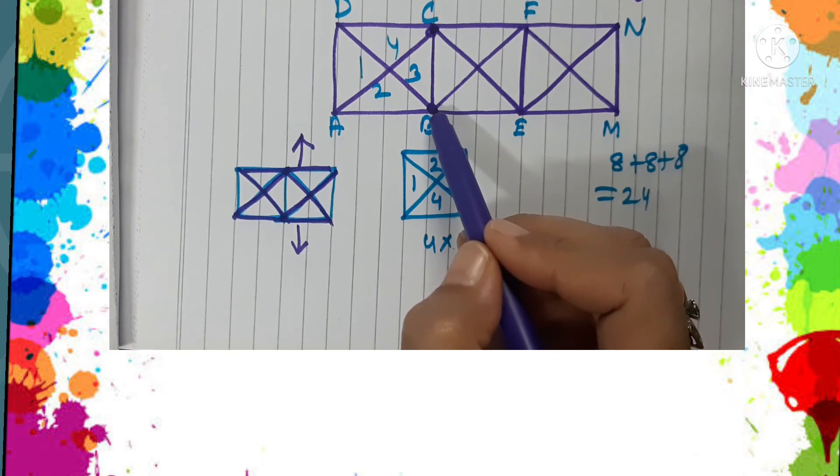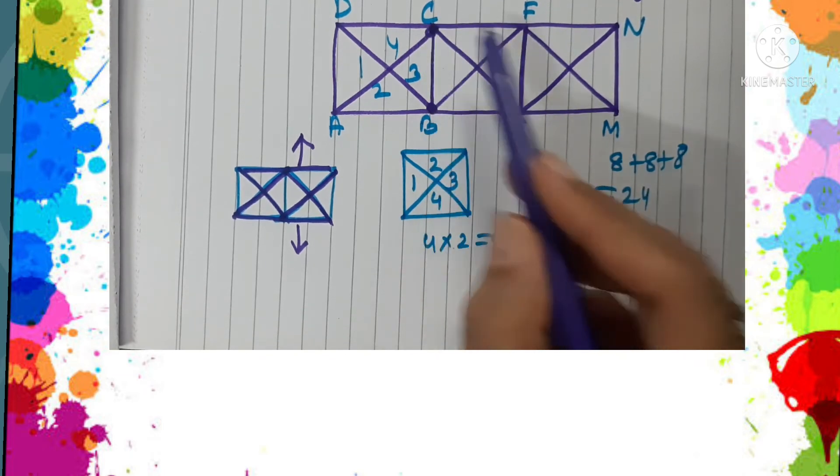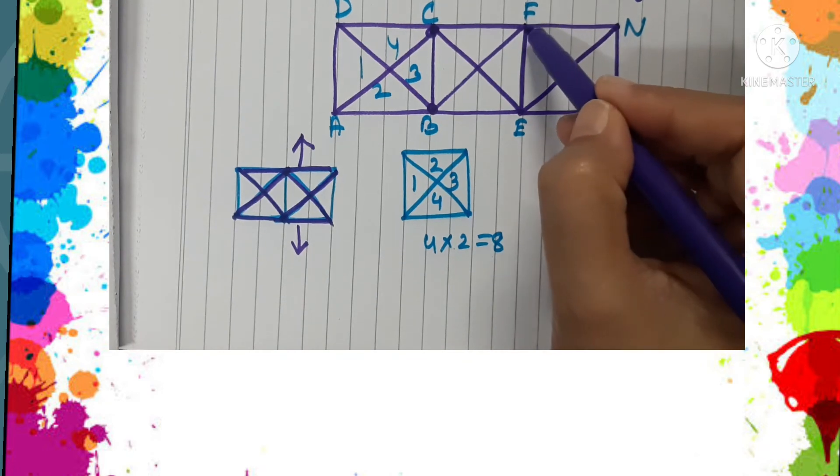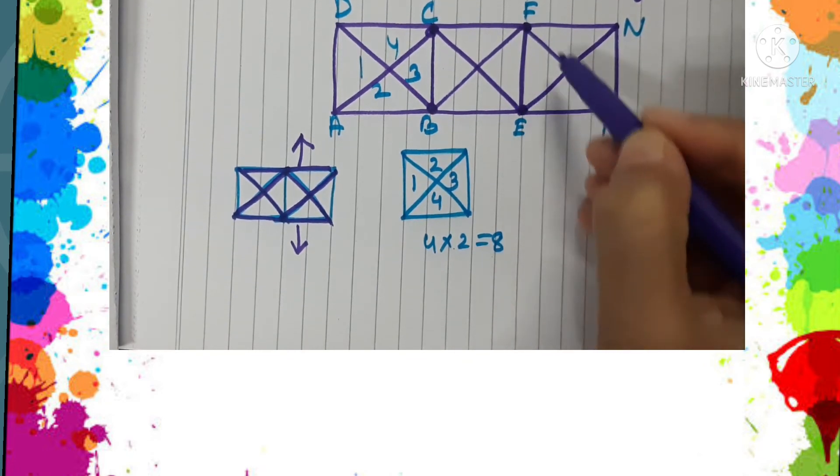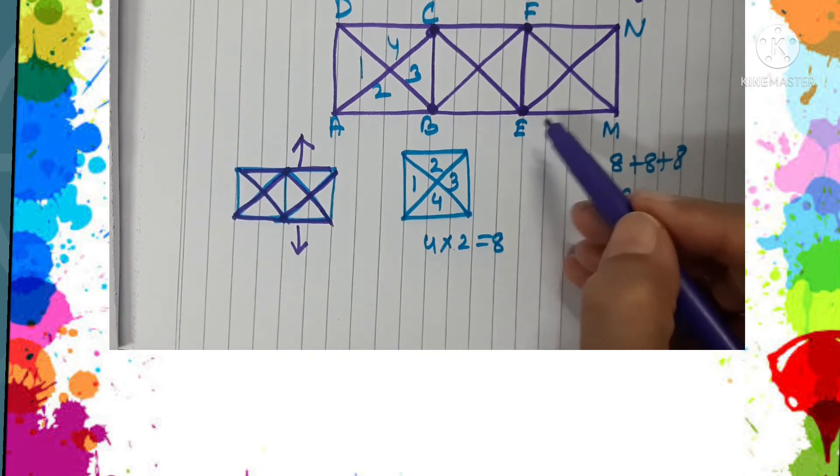Similarly, you notice that the same thing is happening because BEFC and EMNF are two squares which are again joined by this segment FE, so we get two more triangles.